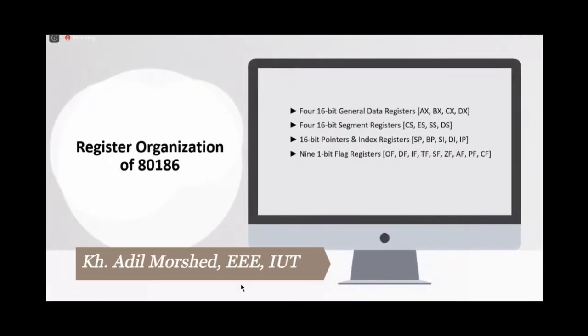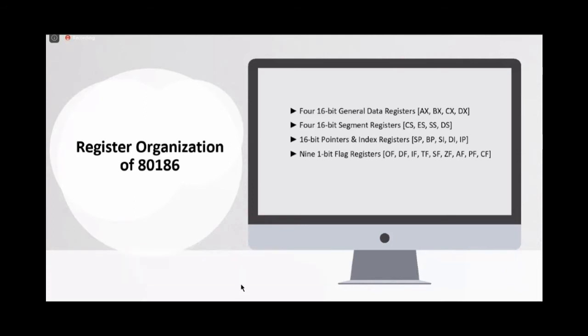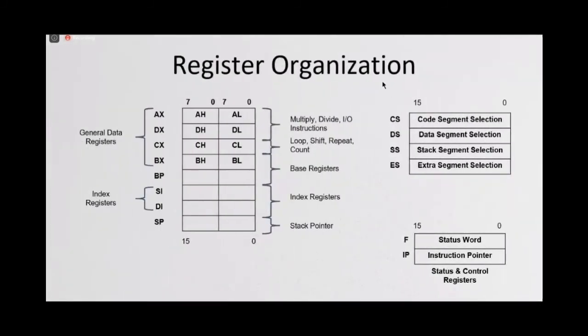I am Adil Morset. In my part, I am going to discuss about the register organization and instructions of 80186. The register organization of 80186 is very much identical to its predecessor, the 8086, like the four data registers, four segment registers, pointers and index registers, and different flag registers. In this slide, we can see the data register organization, the segment register, index registers, and the status and control registers.